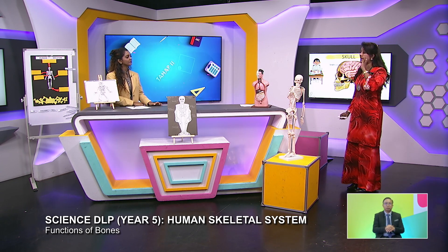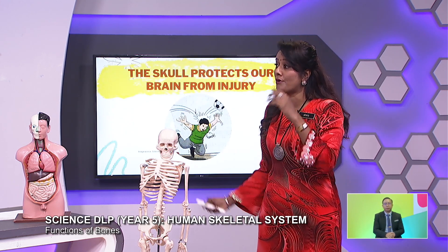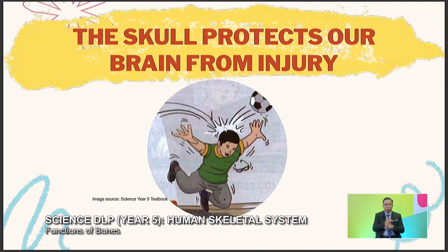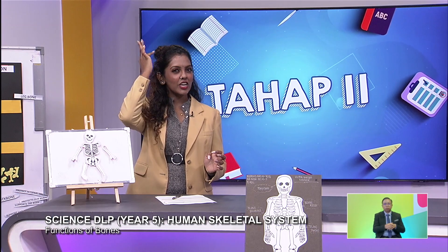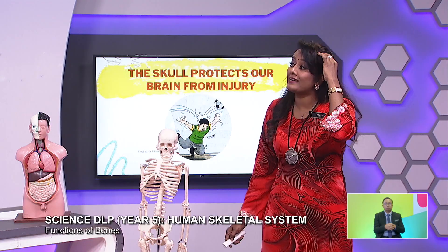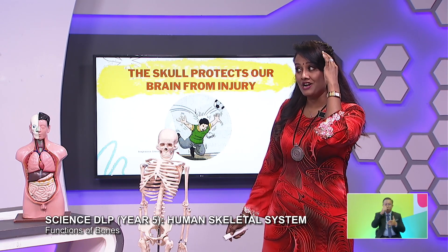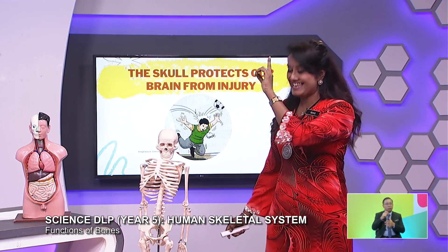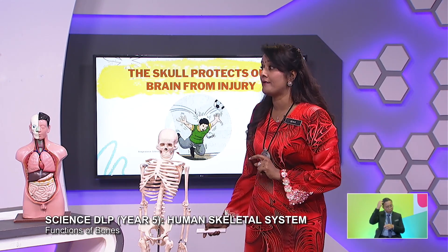The skull is here. It protects — the skull protects our brain from injury. When you see the skull, you can knock it, you can press. You can see how it feels. Is it soft? It's very hard. And it's very hard so that it can protect what's inside our head — brains. Skull protects our brain from injury.